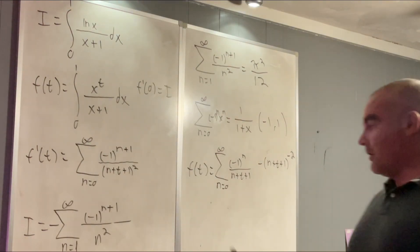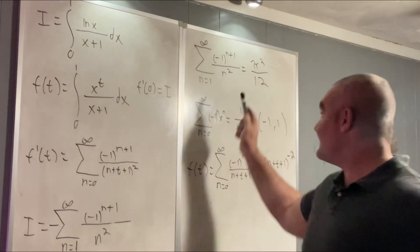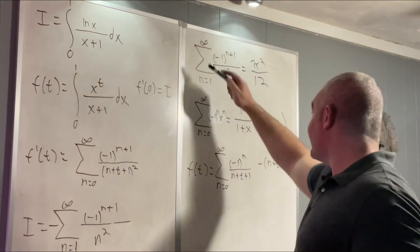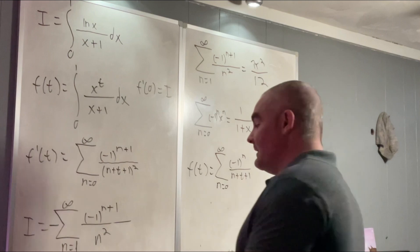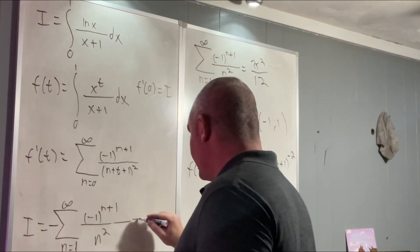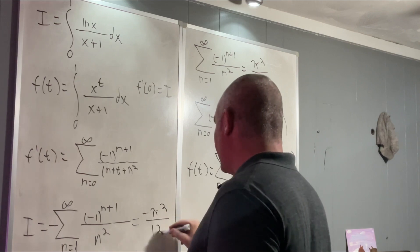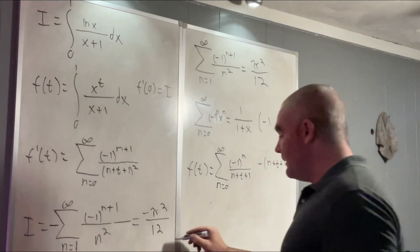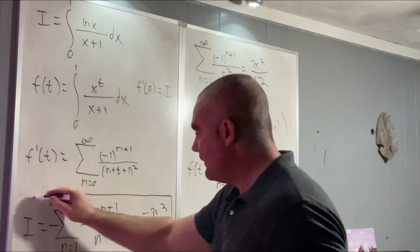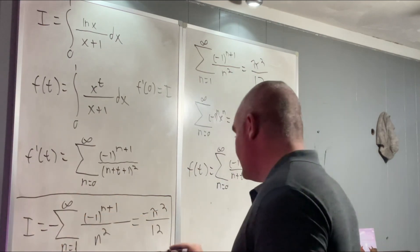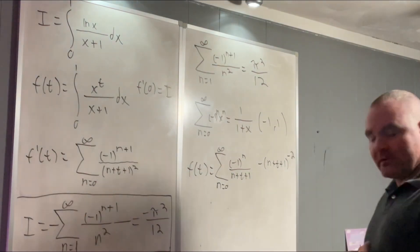All right. Well, now we have it exactly. Now we have I is equal to the negative of this thing, which is the negative of this thing. In other words, it's equal to negative pi squared over 12. And there you go. That's my video. Hope you enjoyed that.